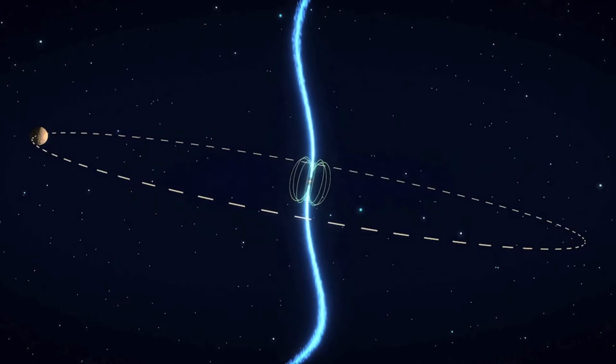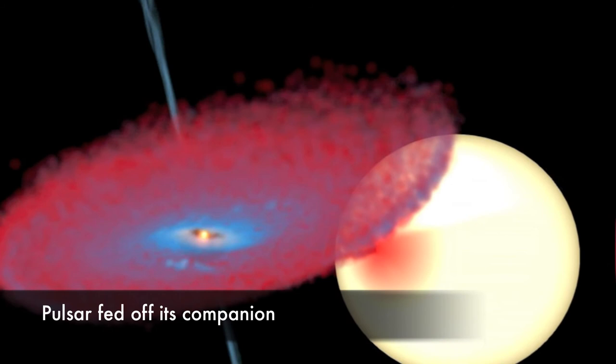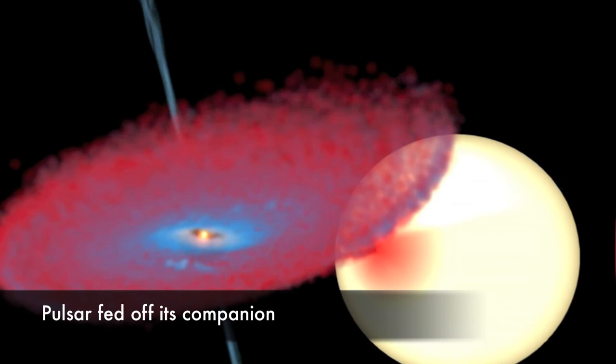The rapid spin of the pulsar tells us that the system once possessed a massive accretion disk as the pulsar stripped matter from its stellar companion. The leftover of this star is what we see today as the planet.